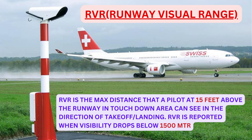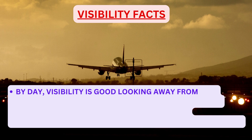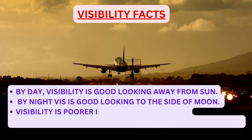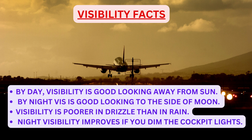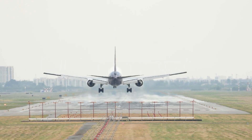Some facts about visibility: by day, visibility is good looking away from the sun, and by night, visibility is good looking into the side of the moon. Visibility is poorer in drizzle than in rain. At night, visibility apparently improves if you dim your cockpit lights, allowing you to see better outside.